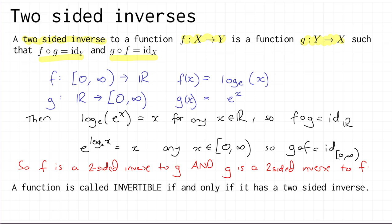As a final piece of vocabulary: we say a function is invertible if and only if it has a two-sided inverse. So the functions f and g on this slide are invertible — they have two-sided inverses.